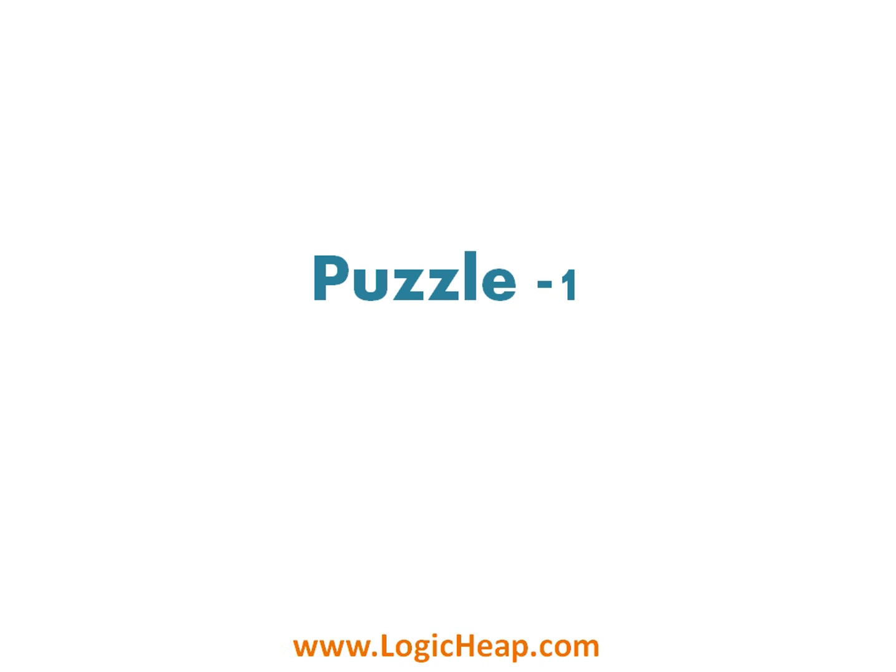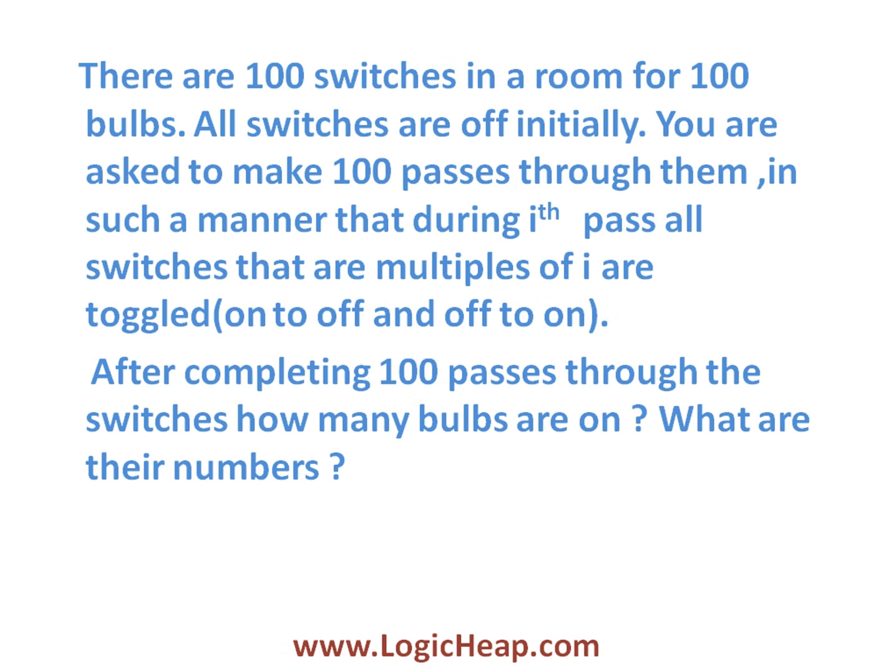Hello friends. In this series we will see all the puzzles that are most commonly asked. So let's see the first puzzle. There are 100 switches in a room for 100 bulbs. All switches are off initially. You are asked to make 100 passes through them such that during the ith pass, all switches that are multiples of i are toggled. After completing 100 passes, you have to determine how many bulbs are on and what are their numbers.